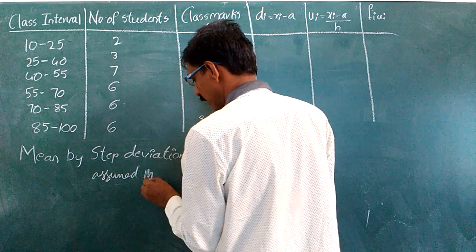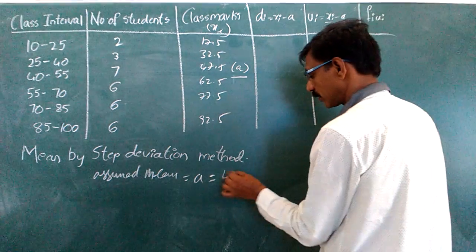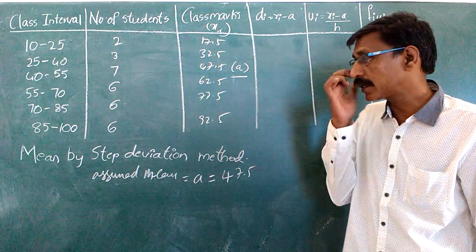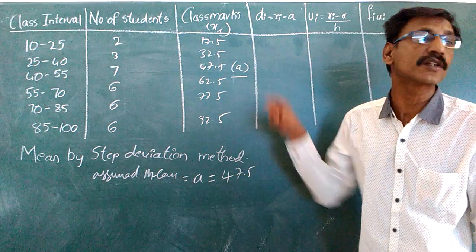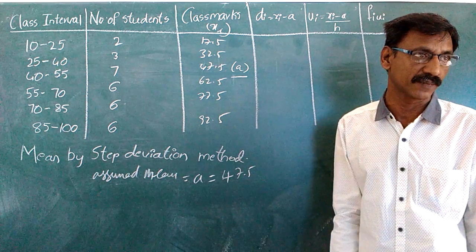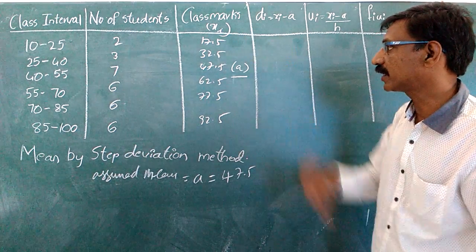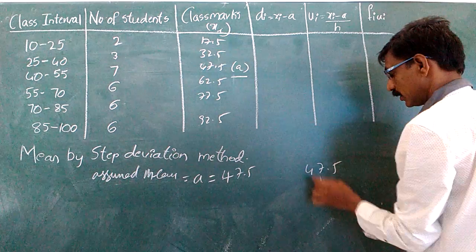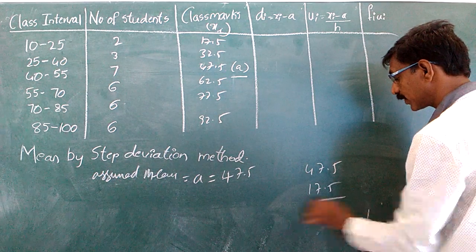Assume mean A is equal to 47.5. This assumed mean is taken from the middle of the distribution as it is the largest value compared to the others.